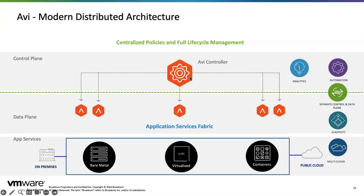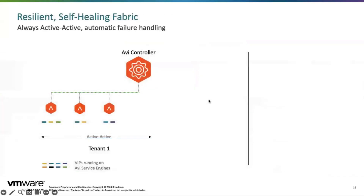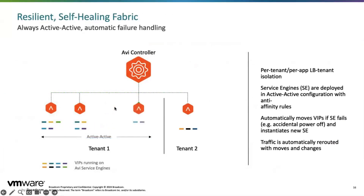AVI has many features beyond what NSX offers. It has rich analytics and makes automation easy with RESTful APIs — you can get Ansible or Terraform code snippets. A key differentiator is the elasticity: AVI uses an active-active setup, where you can have multiple service engines all running active-active. This differs from NSX, which runs in an active-standby setup. This helps with the availability of your services in AVI, as VIPs are distributed across multiple service engines.